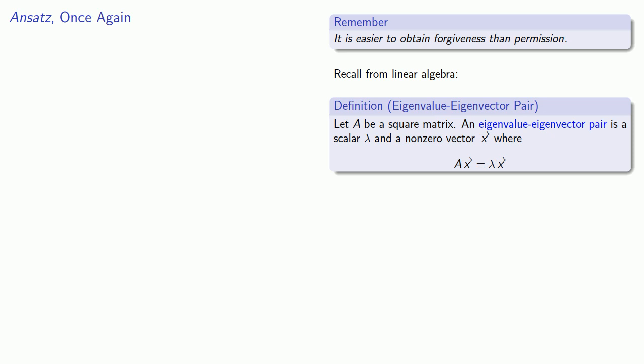Let A be a square matrix. An eigenvalue-eigenvector pair is a scalar lambda and a non-zero vector x, where ax equals lambda x.